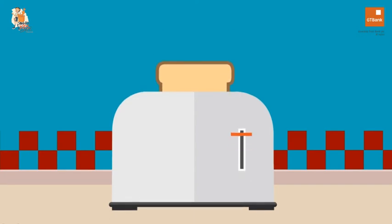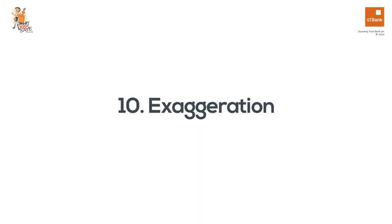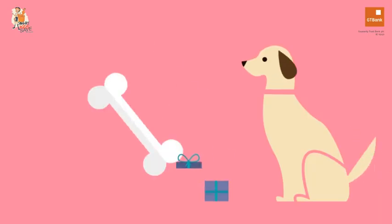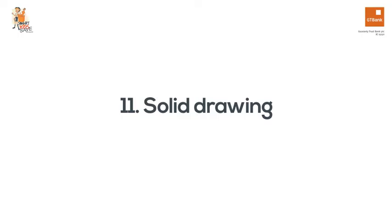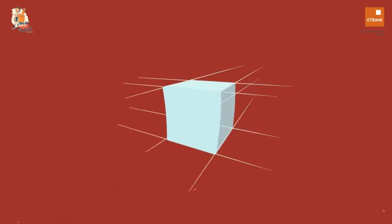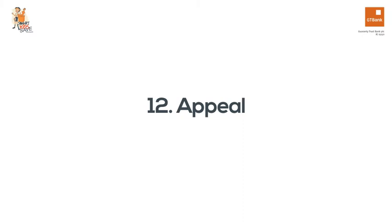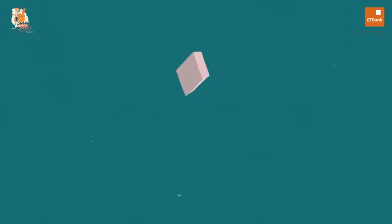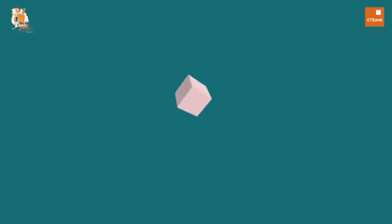Number nine: timing. Timing helps with realism and makes objects abide by the laws of physics. Number ten: exaggeration. This imitates reality but in an extreme way to create a more emotional scene. Number eleven: solid drawing, which takes into account the form of objects in 3D space, giving them volume and weight. Number twelve: appeal. This is when something is designed so well that it attracts the eye — the way a thing is drawn, the way it moves, the way it's animated — all these things together help the viewer feel the character is real, even though it's not.